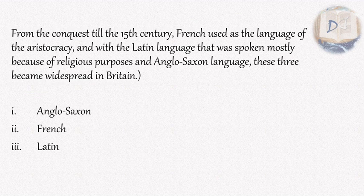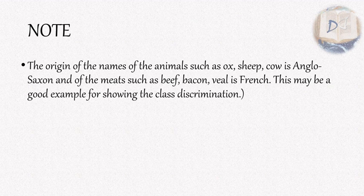As a quick note, the origin of the names of animals such as ox, sheep, and cow is Anglo-Saxon, while the names of their meats — such as beef, bacon, and veal — are French. This may be a good example of the class discrimination of the time.